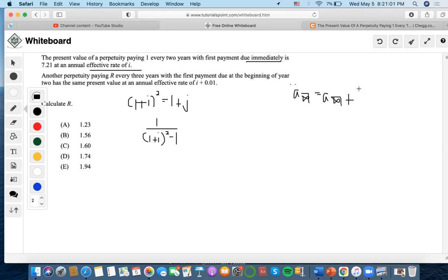Plus one, which means we add one. The equation equals 7.21. Now let's solve for i. We can move this to the other side, then move this part to the other side.